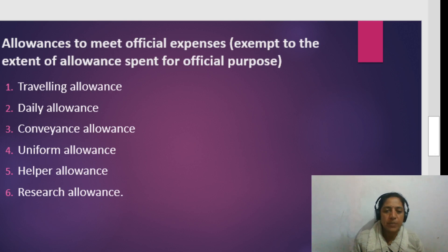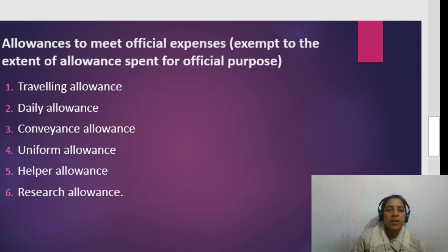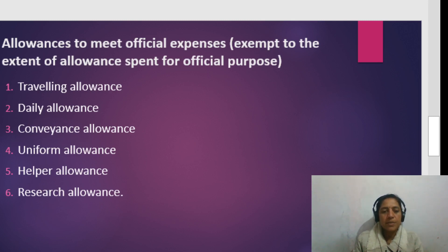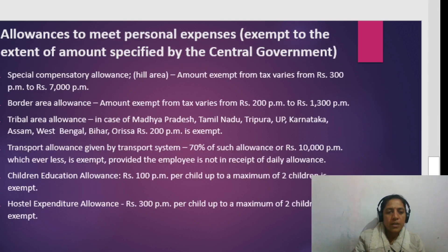Allowances to meet official expenses are exempt to the extent of allowance spent for official purpose. These include: traveling allowance, daily allowance, conveyance allowance, uniform allowance, helper allowance, and research allowance. All these are exempt only to the extent actually spent on official duties.